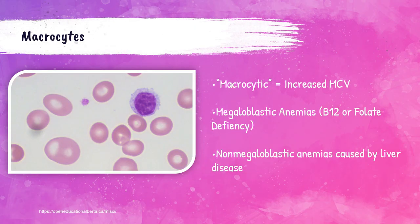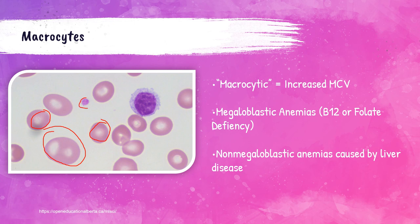Macrocytes refer to larger than normal red blood cells. This patient's peripheral blood smear has an increased MCV index. If you look at it, this is a normal red blood cell size, and look at this one — that's a huge one, that's a macrocyte. This is a platelet and this is a lymphocyte. So these are macrocytes.